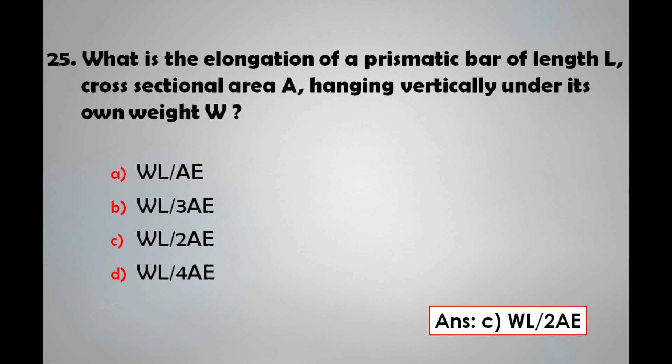What is the elongation of a prismatic bar of length L, cross-section area A, hanging vertically under its own weight W? A) WL/A, B) WL/3A, C) WL/2A, D) WL/4A. The answer is: the elongation of a prismatic bar of length L, cross-section area A, hanging vertically under its own weight W is WL/2A.